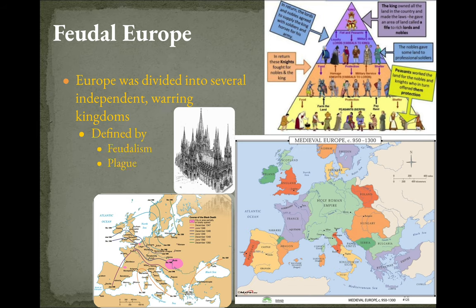So, feudal Europe — just a couple of things to remind you of. Europe was divided into several independent kingdoms, and feudal Europe was defined by the idea of feudalism, where you've got that strict social structure of peasants or serfs, knights, skilled workers, merchants, nobles, and then the king at the top. It's also defined by the plague, especially towards the end of it, that drastically changed the landscape of people and where and how they were living.